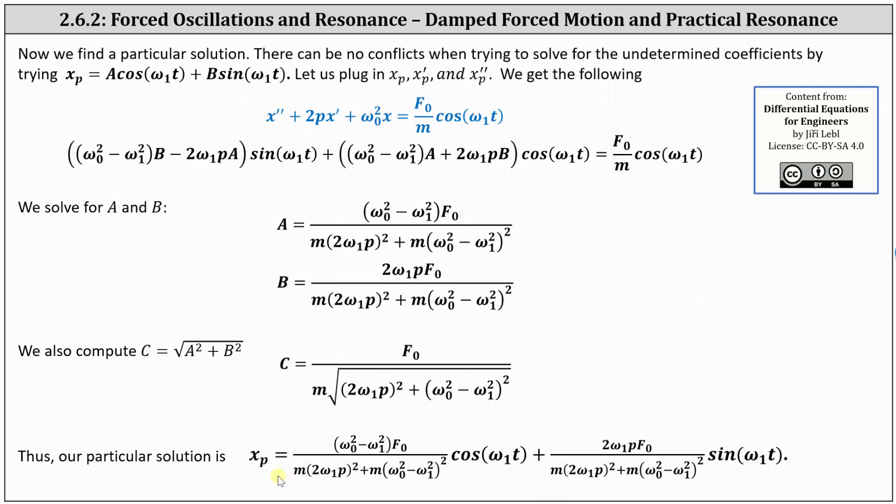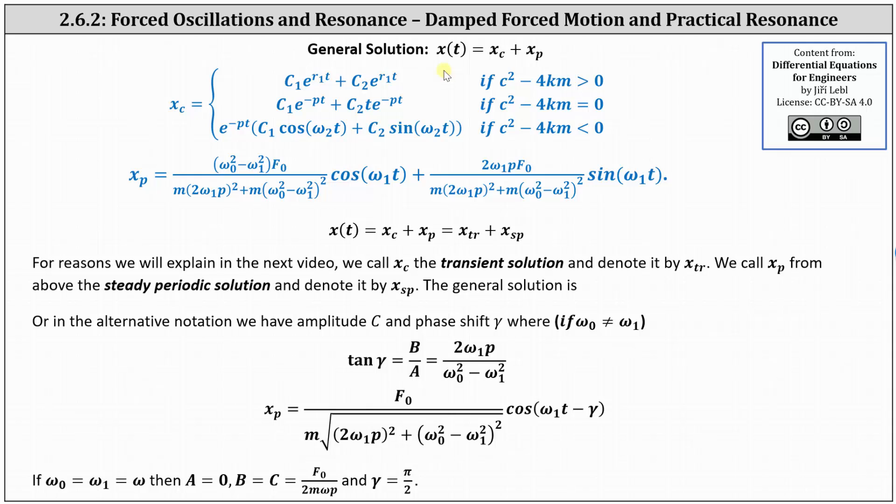And now because we have a formula for X sub C and X sub P, we have a formula for the general solution. We have the complementary solution given by X sub C, and then we have a particular solution given by X sub P, and therefore the general solution is the sum of X sub C and X sub P.